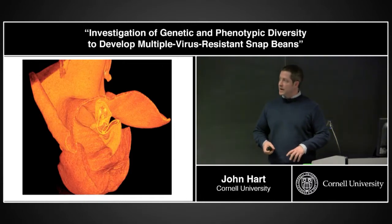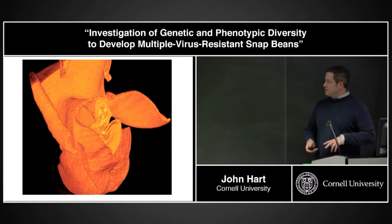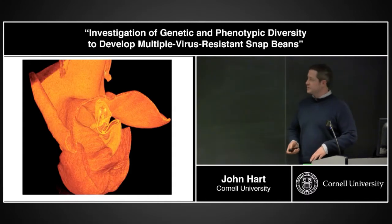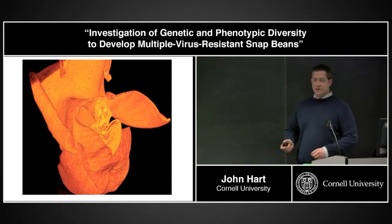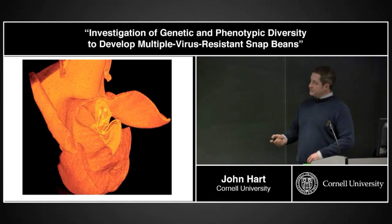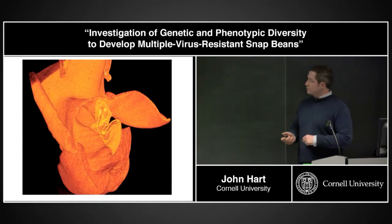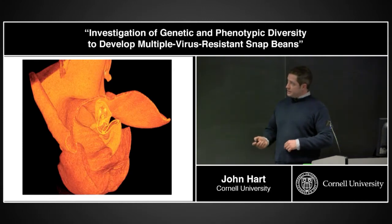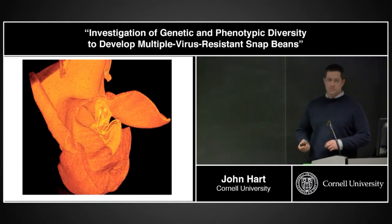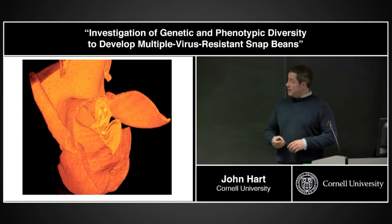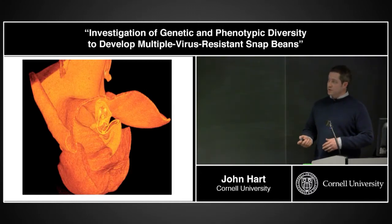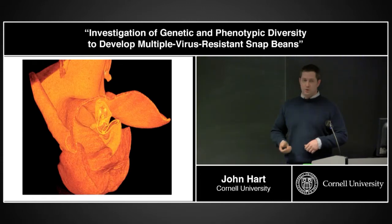I used the Cornell Core Labs Imaging Center's micro-CT scanner — the first time is free — to examine deformed flowers from CMV-infected plants. The anthers and style are normally wrapped inside the keel structure of the flower, forming a spiral pattern so that anthers and stigma come into close contact for pollination. In the deformed flower, there appears to be a physical barrier — a giant crook in the center — preventing the anthers from reaching the stigma, so the flower likely would not set a pod.